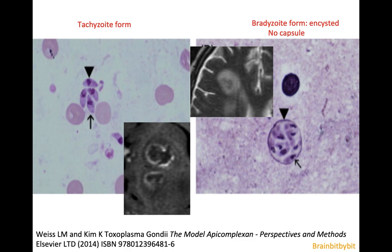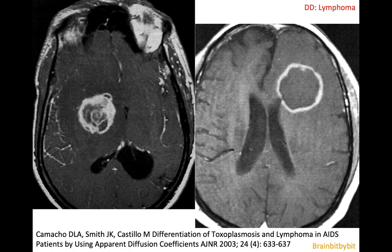Patients with HIV are not only prone to toxoplasmosis, but also have a higher risk of lymphoma. So it might be difficult to distinguish between a lymphoma with rim enhancement and toxoplasmosis in the brain. If it is a single lesion, it is more likely to be lymphoma. You can also use diffusion-weighted images, because there is increased diffusion in the center of the toxoplasma lesion — it is not as thick as a pyogenic abscess, but very watery.